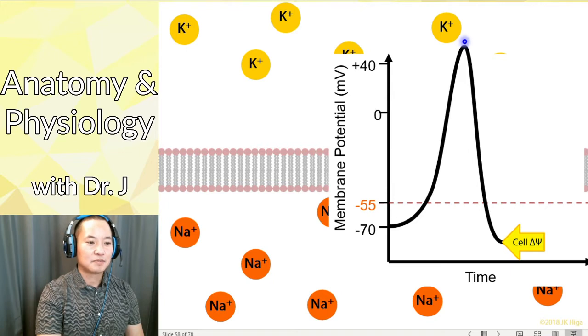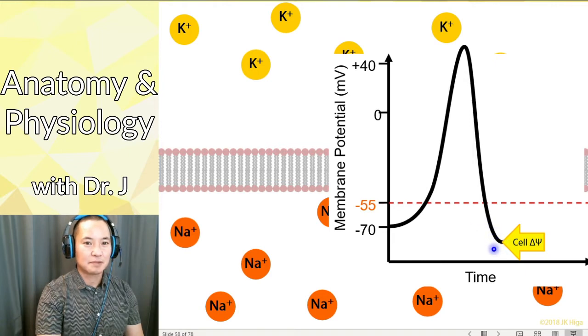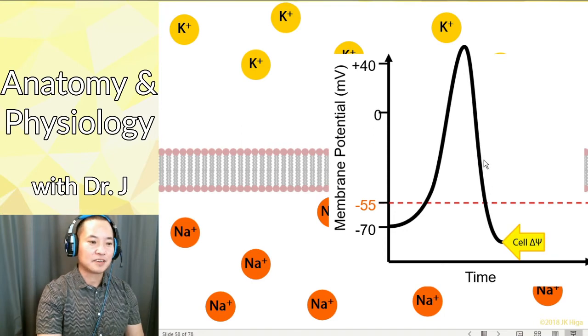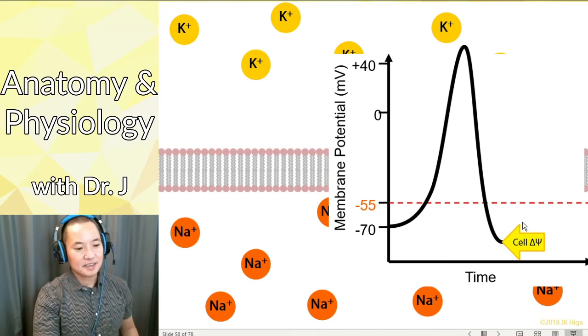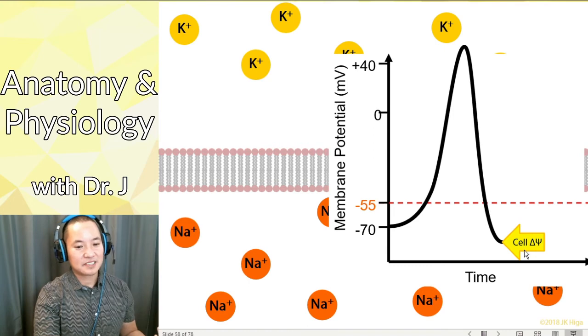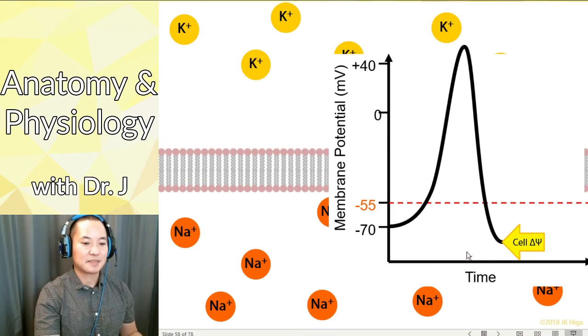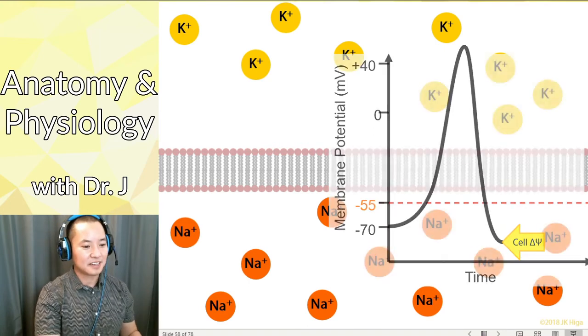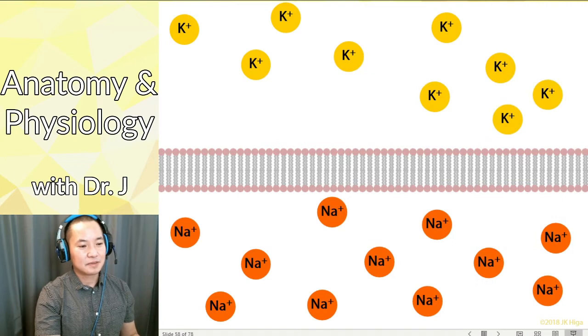So actually we call this part depolarization because polarizing means that you have an imbalance between the different sides of the membrane. Remember the cell started out as negative on the inside. So depolarization refers to undoing that and it actually overshoots it, it actually goes all the way positive. But this is what we call repolarization because you're bringing it back to where it goes. But actually at this point right here we call it hyperpolarization because when you lose all that potassium it actually overshoots it again, it actually goes a little below negative 70. So that's what we call hyperpolarization.